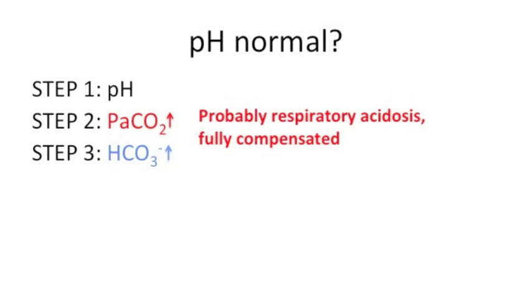So what if the pH is normal? Well, this could either be because your patient is fine and the CO2 and bicarbonate are normal with no disturbance whatsoever, or maybe there is full compensation. So it is still important to go through all three steps. If we see a normal pH but find an abnormal CO2 and bicarbonate in Steps 2 and 3, we need to put this in the context of the clinical picture, because this could represent either a fully compensated metabolic alkalosis or a fully compensated respiratory acidosis. The respiratory acidosis is probably more likely, as many patients with COPD chronically retain CO2, so the bicarbonate goes up and stays up.